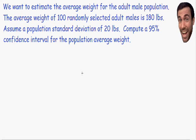Welcome to my video on confidence intervals. In this example, we want to estimate the average weight for the adult male population. The average weight of 100 randomly selected adult males is 180 pounds. If we assume a population standard deviation of 20 pounds, compute a 95% confidence interval for the population average weight.